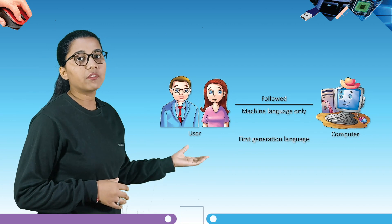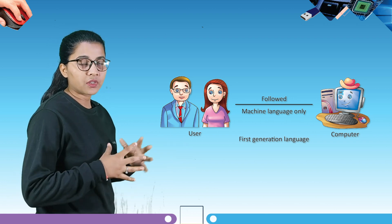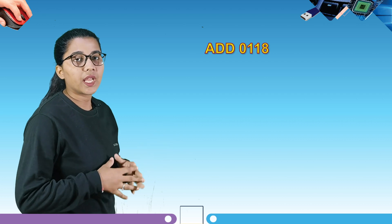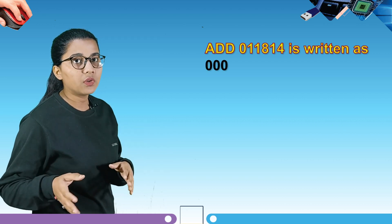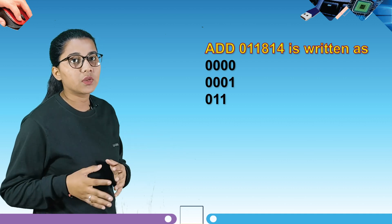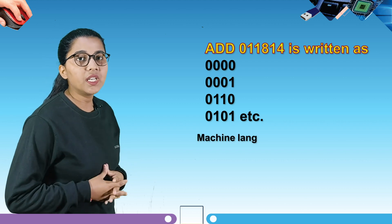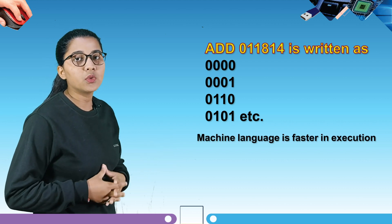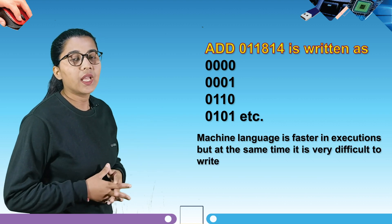Here you can see the first generation language of the computer. For example, in first generation language, ADD 011814 is written as 0 0 0 0 0 0 1 0 1 0 1 0 1 0 1, and so on. Machine language is faster in execution, but at the same time it is very difficult to write and understand.